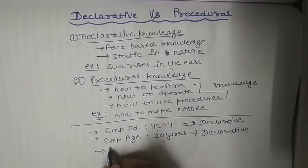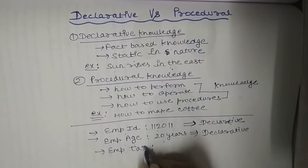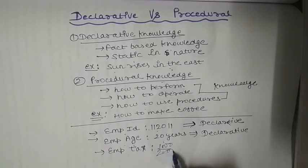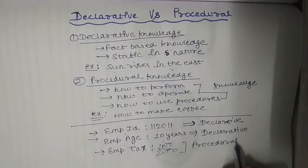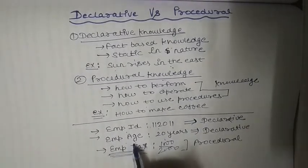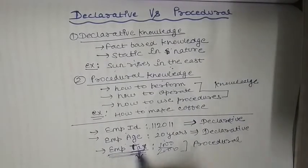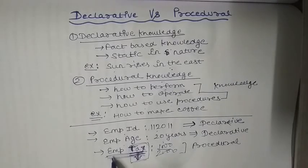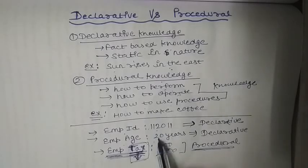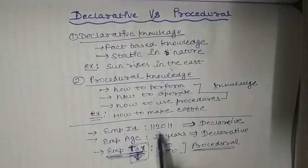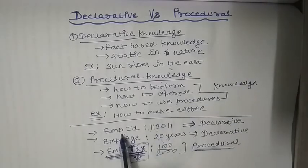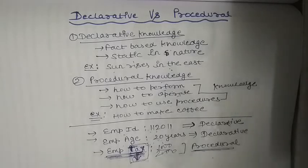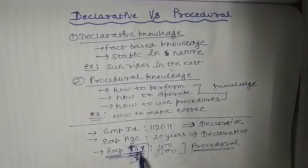Now suppose the employee is paying tax — sometimes a thousand rupees, sometimes twenty thousand. This knowledge becomes procedural because we need to know the procedure to calculate the tax: how to calculate, how to operate, how to use procedures for calculating the tax that the employee has to pay. So employee ID and age are constant facts, but calculating tax requires procedures, making it procedural knowledge.